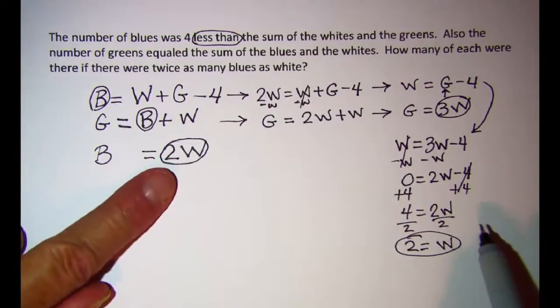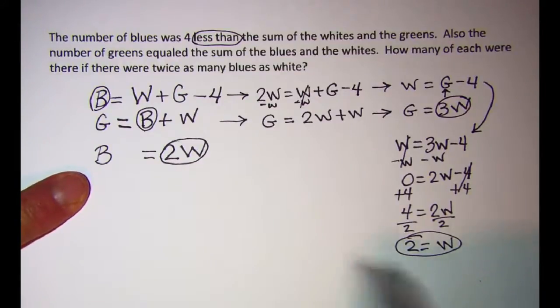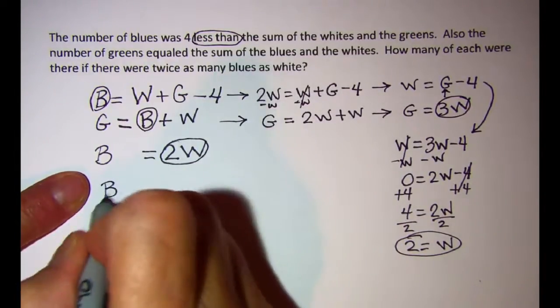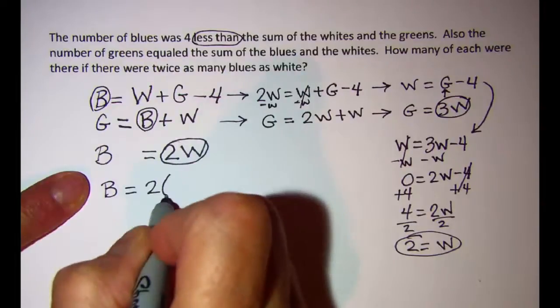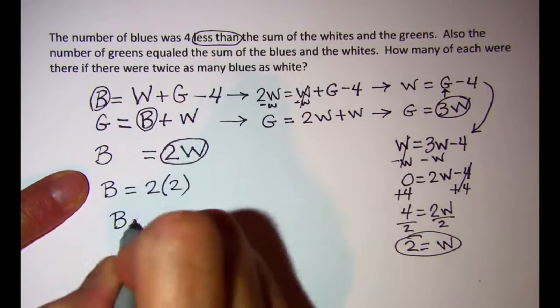If W is 2 I can put that back in here and get my number of blues. So blues is equal to 2 times 2. So my number of blues is 4.